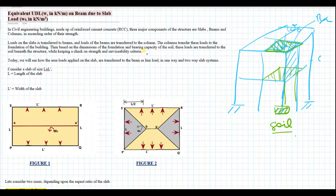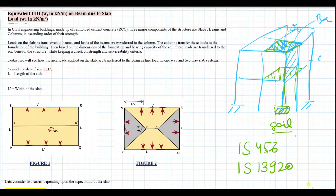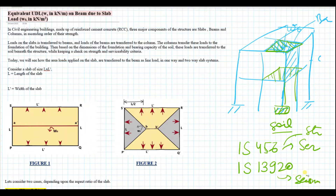While designing the structure we should always keep in mind serviceability limits such as deflections, which should not cross the permissible limits given by IS 456. The design criteria are also given in IS 13920, which is the ductile detailing code required for seismic qualification of the building. IS 456 gives the serviceability and strength criteria, and IS 13920 gives strength criteria for seismic loads. So today we will see how area loads on the slab are transferred to beams as line loads in one-way and two-way slab systems.